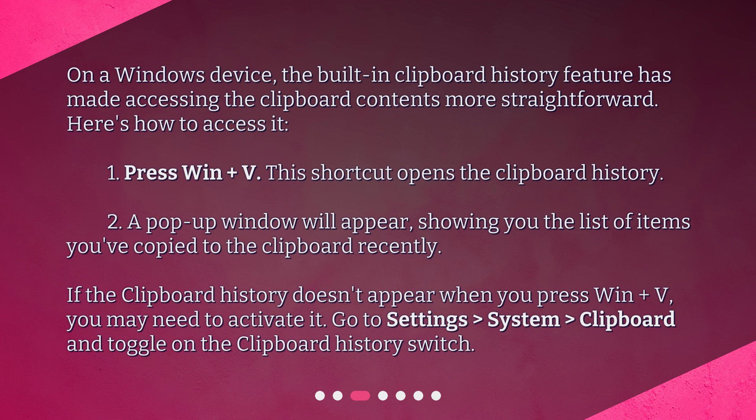A pop-up window will appear showing you the list of items you've copied to the Clipboard recently. If the Clipboard History doesn't appear when you press Win + V, you may need to activate it. Go to Settings, then System, then Clipboard, and toggle on the Clipboard History switch.